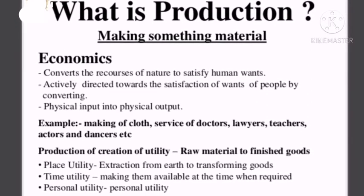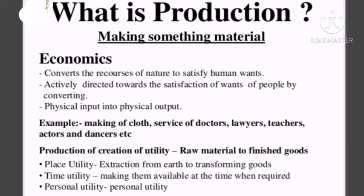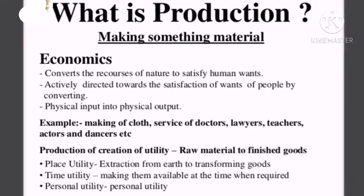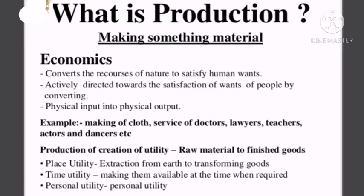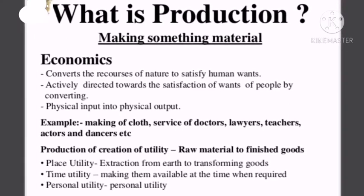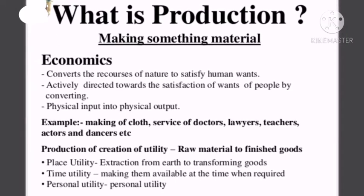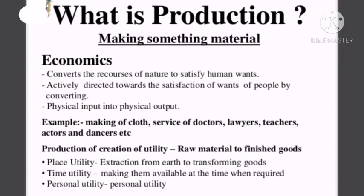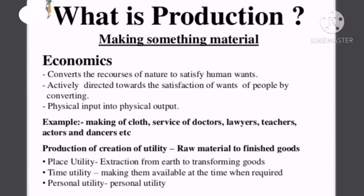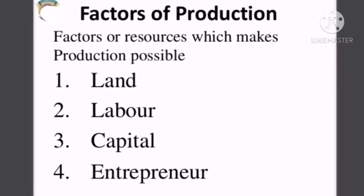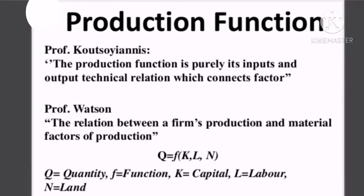Third, production requires some sort of activity — physical or mental. A lawyer whose activity is mental and a farmer whose activity is physical — both are producers. So production is the process of transforming the inputs like land, labor, capital, and organization into output. These are the factors of production.